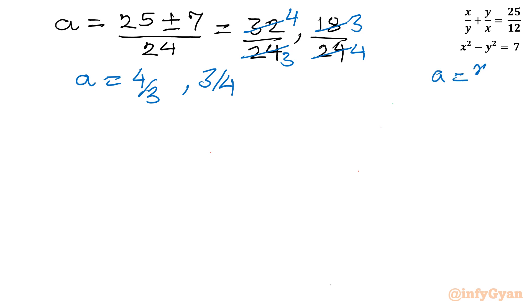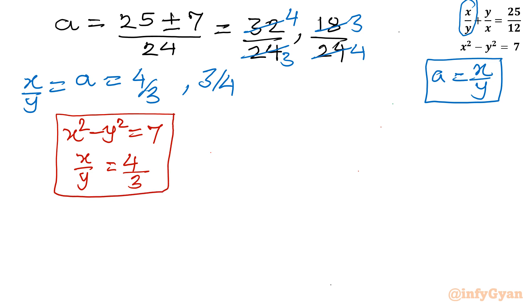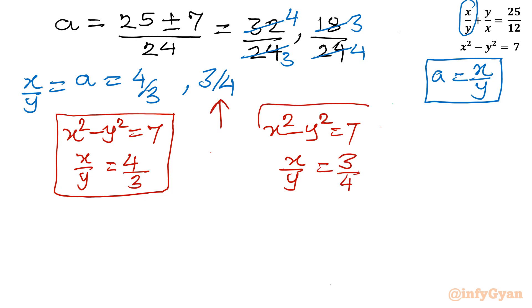Since a was our substitution for x over y, we now have two simpler systems. The first system is: x squared minus y squared equals 7 and x over y equals 4 over 3. The second system is: x squared minus y squared equals 7 and x over y equals 3 over 4. We will solve both systems. From x over y equals 4 over 3, we get y equal to 3x over 4.